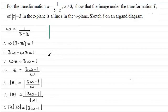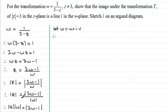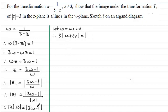Now let W equal U plus iV. Substituting this in, and since we know the modulus of Z equals 3, we have 3 times the modulus of W — which is U plus iV — equals the modulus of 3W minus 1. So that's 3 lots of U plus iV, then minus 1.